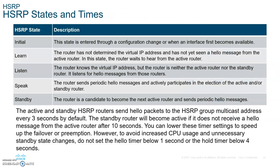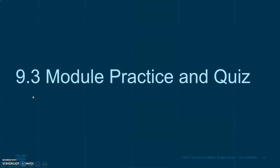Write down the HSRP states because these have appeared on the CCNA exam. The states are: initial, learn, listen, and speak. 'Speak' means the router is sending periodic hello messages and actively participating in the election process. When you run preempt, routers go through initial, learn, and listen before they start speaking. 'Standby' means the router is waiting and ready to become active if the current active router fails.